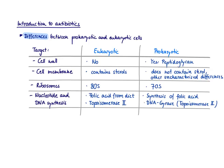Another very good target are the ribosomes. The ribosomes are the workbench for protein synthesis. Eukaryotic cells have ribosomes and prokaryotic cells have ribosomes, but they differ in their chemical composition and size, and that makes them an ideal target. Eukaryotic cells have 80S ribosomes, and prokaryotic cells have 70S ribosomes.